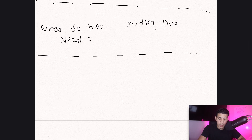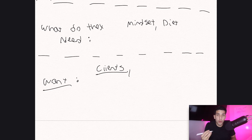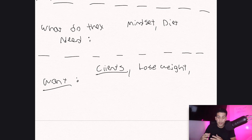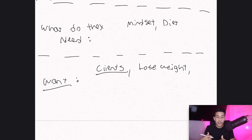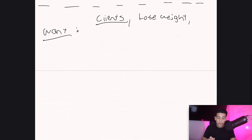The fourth question is: what do they want? Now we can talk about their goals. A lot of the people I talk to want more clients — that's what they want. Maybe your ideal client wants to lose weight, wants to quit smoking, or wants to run a marathon. These are the things they actually want. You're going to use all of this for the fifth question.